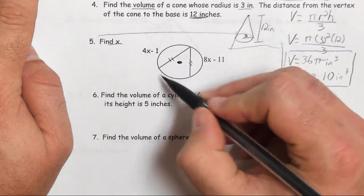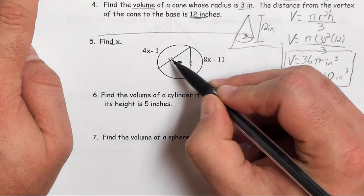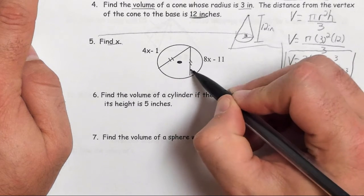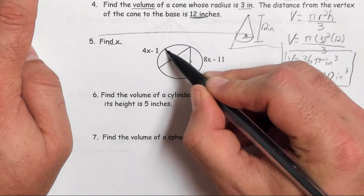I'm looking at a circle with two chords that are marked to be congruent. Now one of the properties we learned in the circle unit was that if I have two chords that are congruent, their arcs are also congruent.